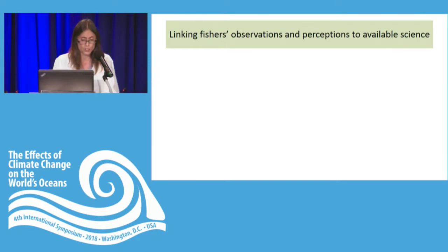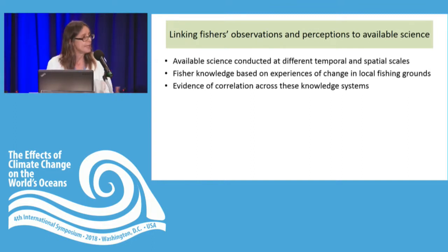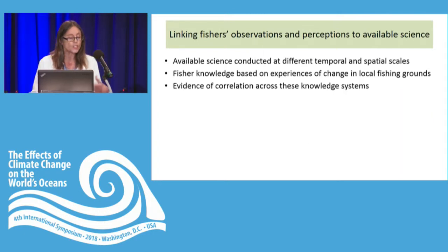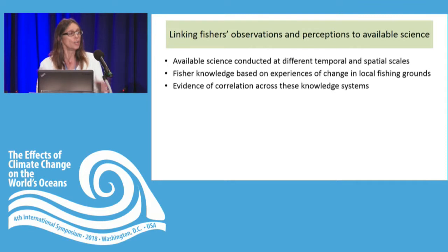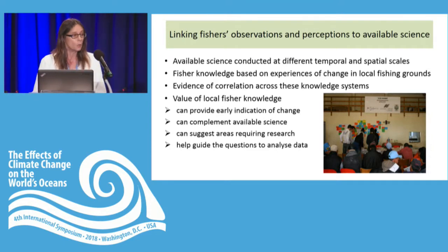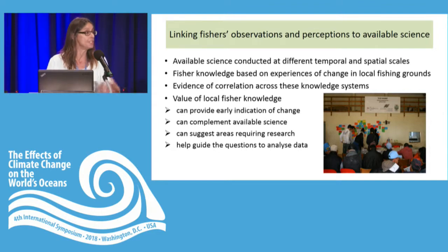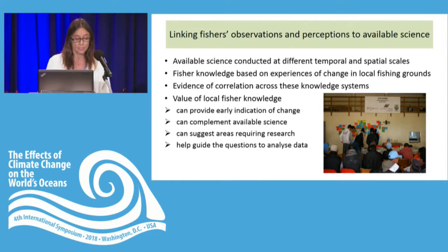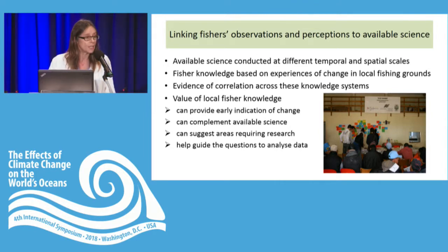One of the highlights of this work is how we were able to link fisher observations and perceptions to the available science. We documented for each case study the fisher knowledge that emerged from the process and then looked at the extent to which it resonated with the available science. We found a high level of correlation across these knowledge systems. The key message is the value of local fisher knowledge: it is valuable for the fisher community to explore and share this information, it can provide an early indication of change to the scientific community, it can complement available science, suggest where research might be needed, and help guide the questions we should be asking when analyzing data.